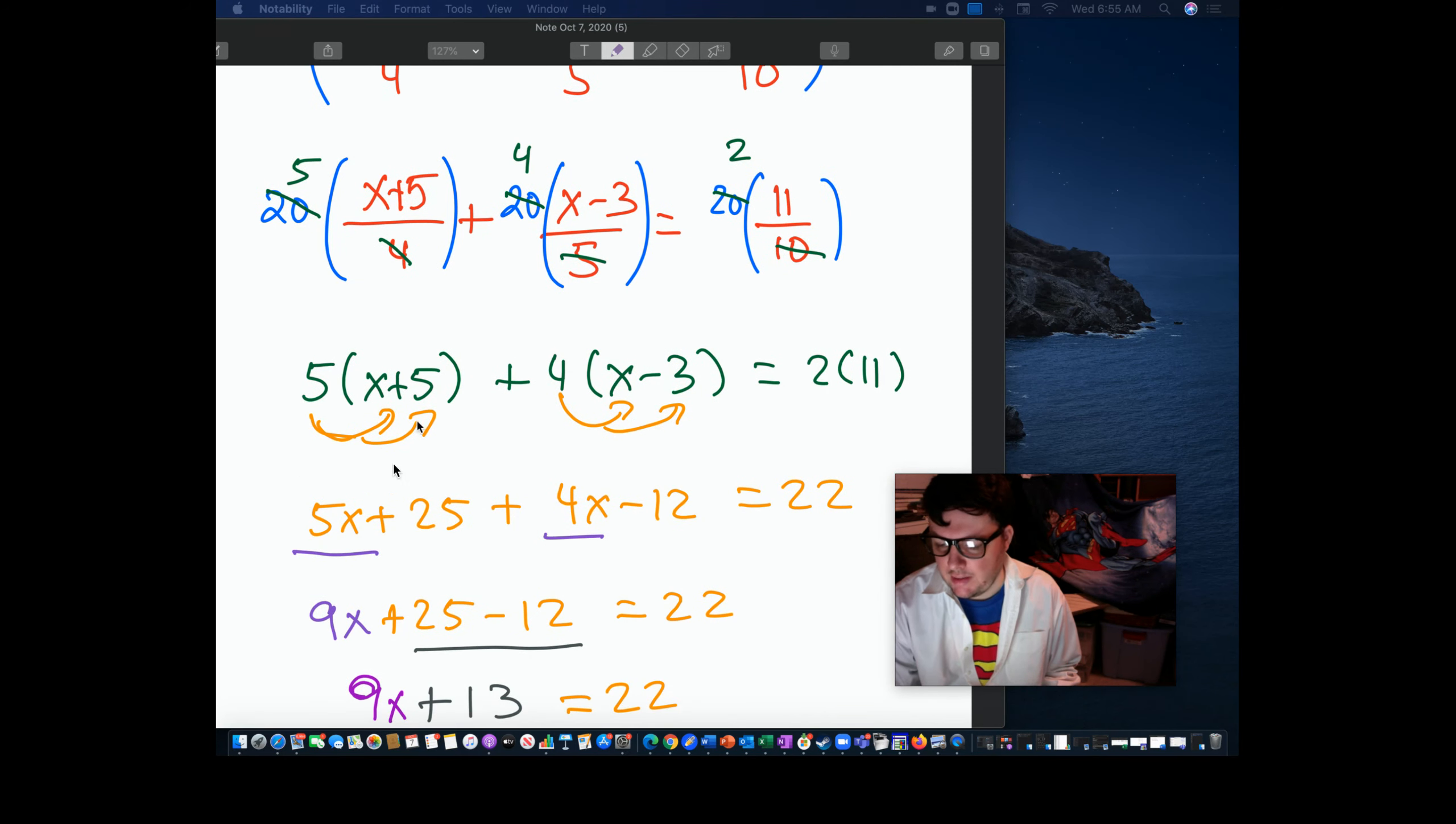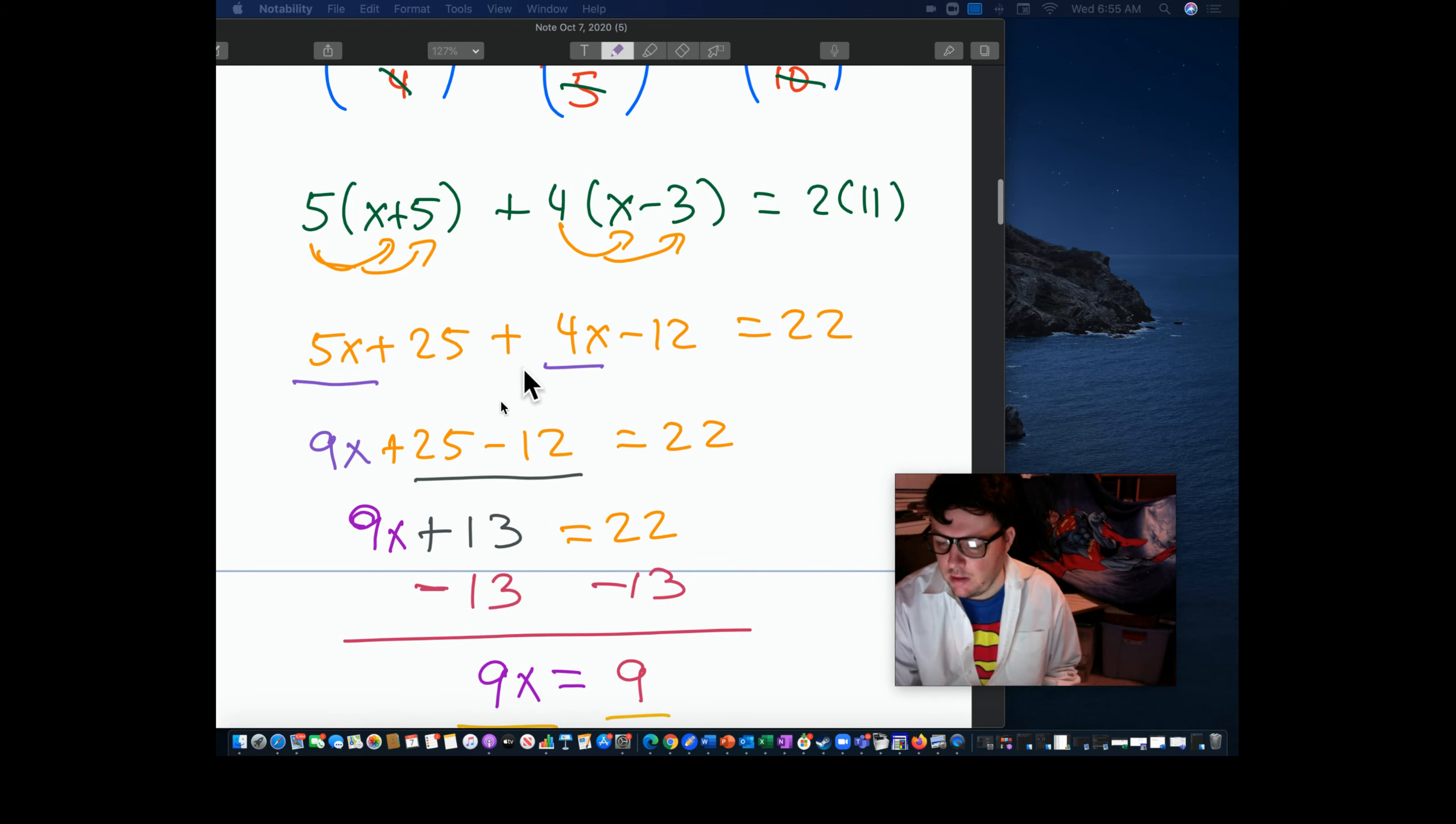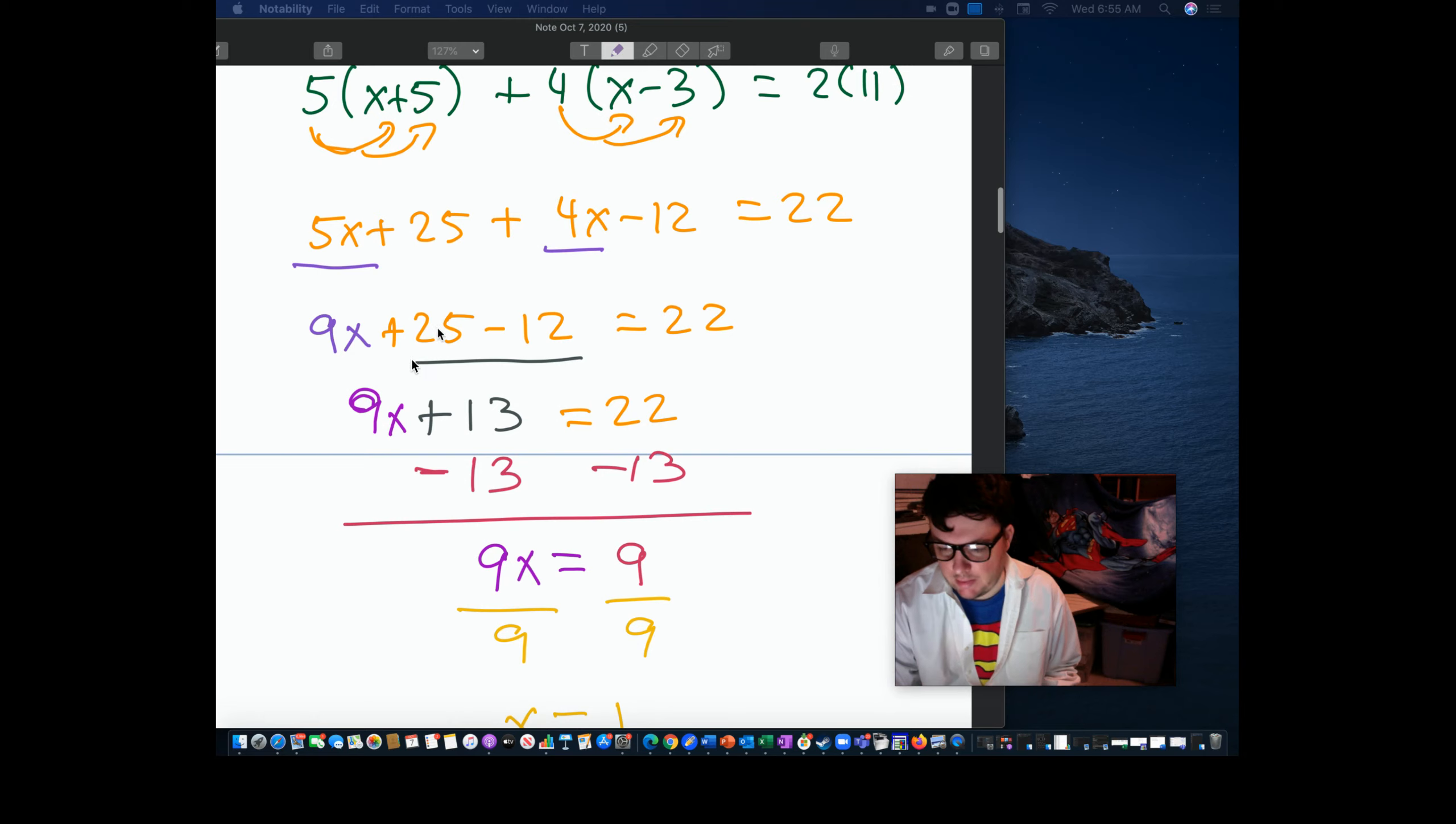I'm left here. Notice again, I distributed. Watch the sign here. We're going to end up getting negative 12. We're here on this line right here. What do I do? Well, I want to combine like terms. So I have 5x and 4x, put those together, get 9x. Then I still want to combine like terms, because I still have numbers or constants together. So 25 minus 12 is 13. We'll put those together.